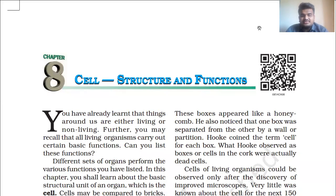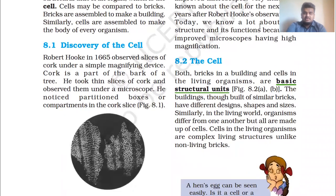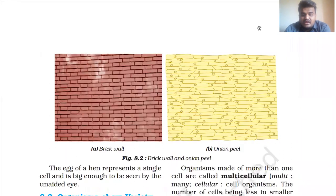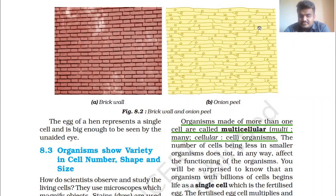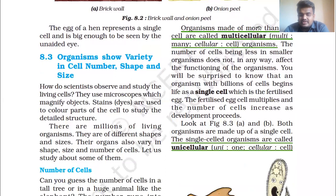Good morning and warm welcome to all friends. In chapter 8, Cell Structure and Functions, we have completed many topics. First of all, we have seen that the cell is the basic structural unit. After this, we studied that organisms show variety in cell number, shapes, and size. We covered unicellular organisms, which have only one cell, and multicellular organisms, which have more than one cell.